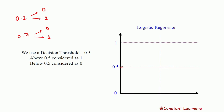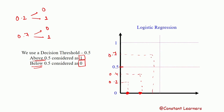We use 0.5 as the decision threshold to decide whether a value moves to category 0 or category 1. If the value is above 0.5, we consider it as 1; if the value is below 0.5, we consider it as 0. For example, if the value is 0.2 we round it off to class 0. If the value is 0.4 we put it into category 0. If the value is 0.7 we put it into class 1, and if the value is 0.8 we push it to category 1. This is how we round off our values and classify the data in logistic regression.